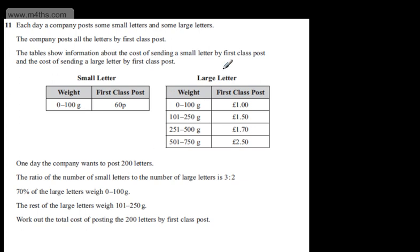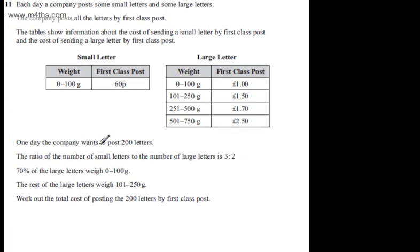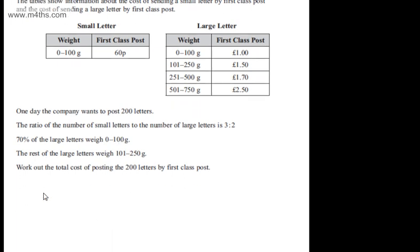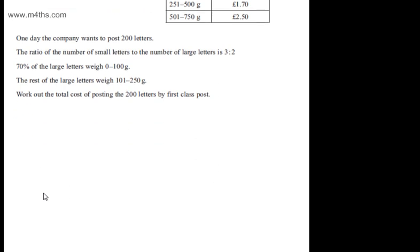So here's our small letter, here's our large letter. One day the company wants to post 200 letters. The ratio of the number of small letters to the number of large letters is 3 to 2. 70% of the large letters weigh between 0 and 100 grams. The rest of the large letters weigh between 101 and 250 grams. We're asked to work out the total cost of posting the 200 letters by first class post.